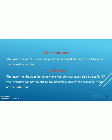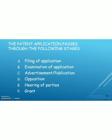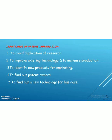Next is the filing of a patent application. First, we have to prepare an application for getting the patent and it must be filed in the patent office. The patent office examines the application and puts out an advertisement for opposition, if any. If there is any opposition, a hearing of parties is done, and after opposition or discussions, the patent will be granted.